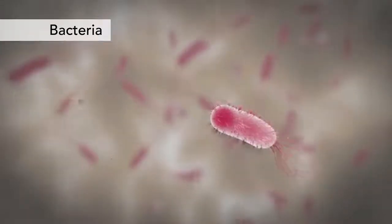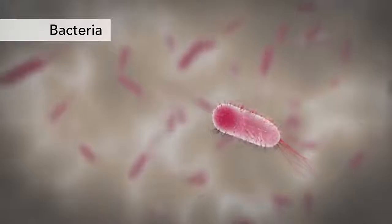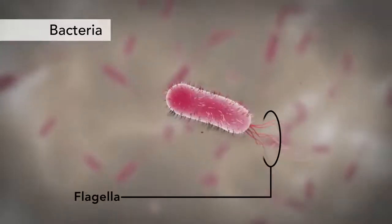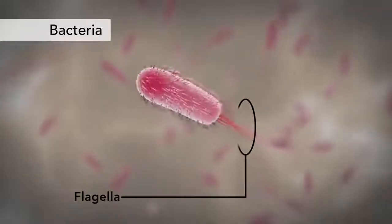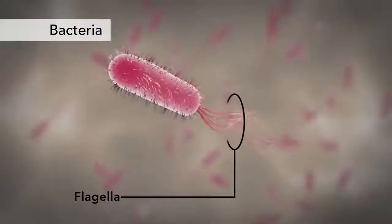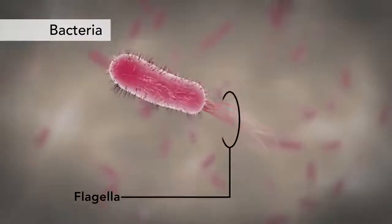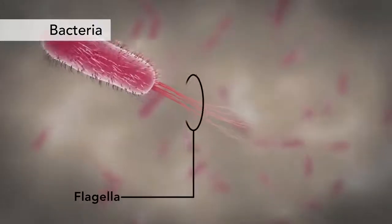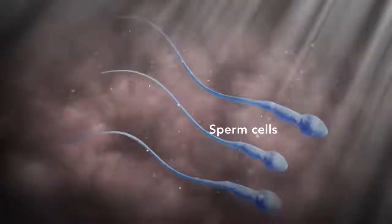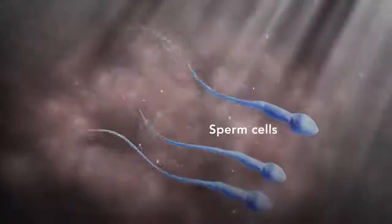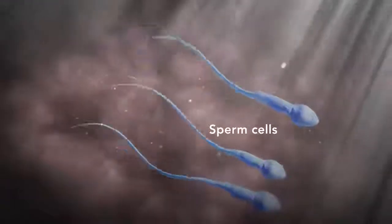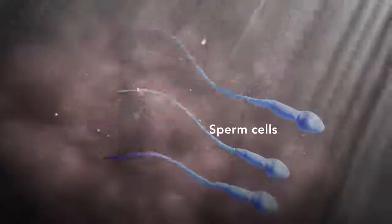Another unique feature in some cells is flagella. Some bacteria have flagella. A flagellum is like a little tail that can help a cell move or propel itself. The only human cell that has a flagellum is a sperm cell.